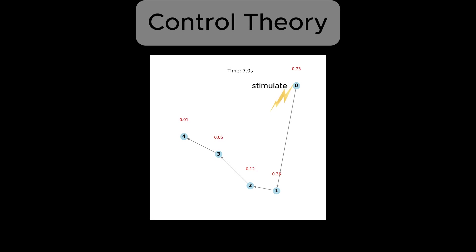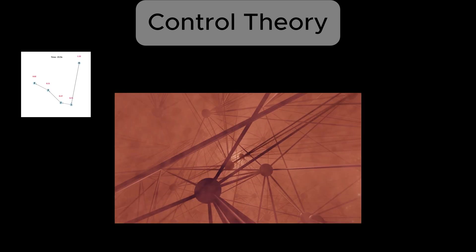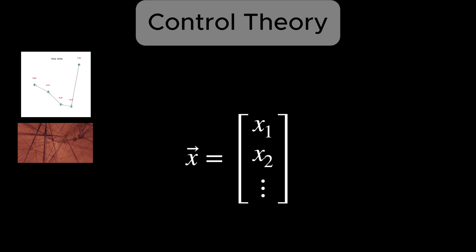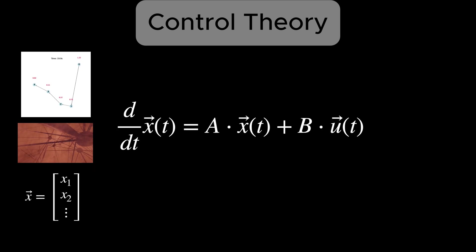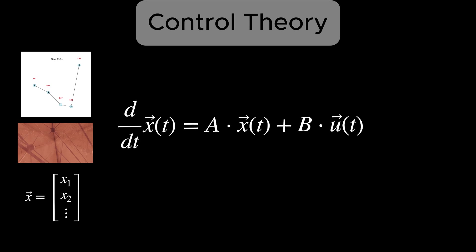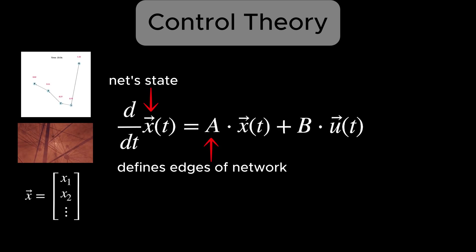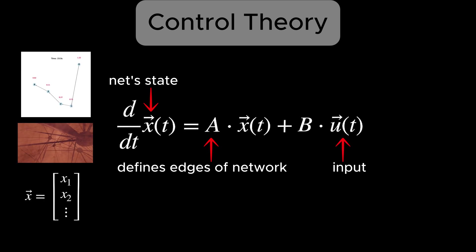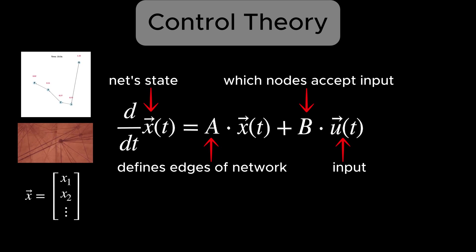Now, let's dive into the basics of control theory. At its core, control theory is about understanding how to guide a system to achieve a desired outcome by applying inputs to certain key points, what we call control nodes. For neural networks, the state of the system is typically set by the activity of neurons, and is represented by a vector X, whose components are the activity of each neuron. These variables, neural activities, change over time according to rules defined by the network's structure and dynamics, captured in what's called a state-space model, which boils down to this equation. Here, X represents the state of the system, such as the neuron's activity. The matrix A encodes the connectivity between the neurons, while U represents the inputs we provide to the system, and B determines where those inputs interact with the network.